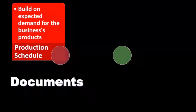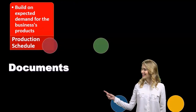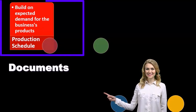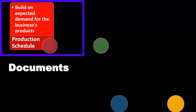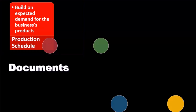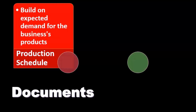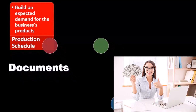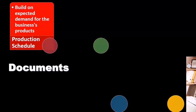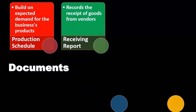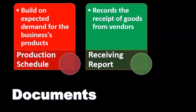Now we'll consider documentation related to inventory management, starting with the production schedule. The production schedule would be involved if we are in the production of inventory. If we're in the purchasing and selling of inventory, we wouldn't have production-type components, depending on the industry. We want to build an expected demand for the business's products. The receiving report records the receipt of goods from the vendor — it records goods received from the vendor.